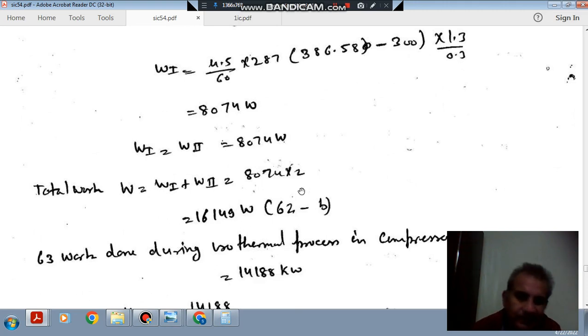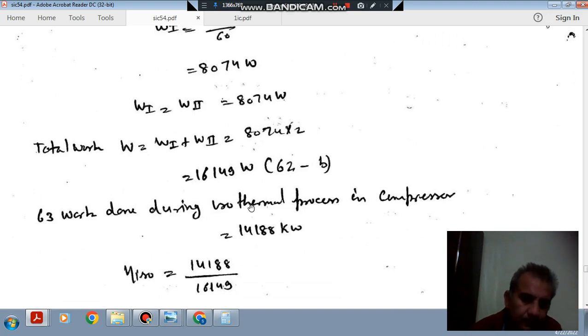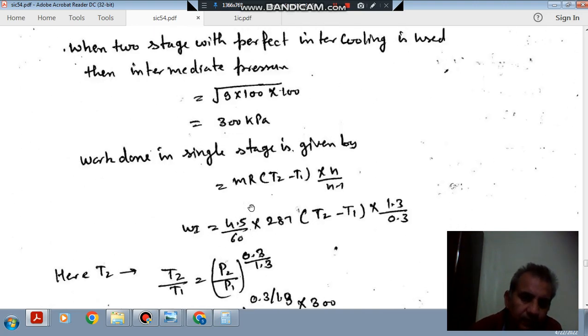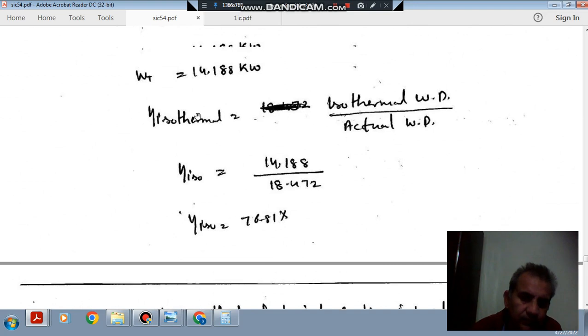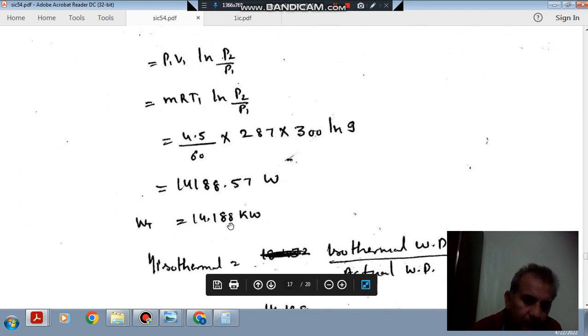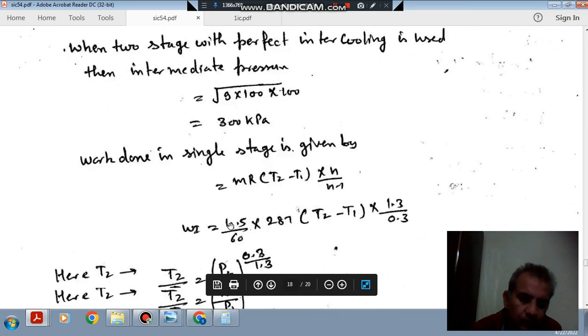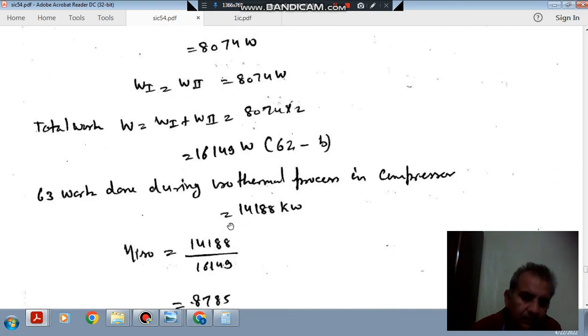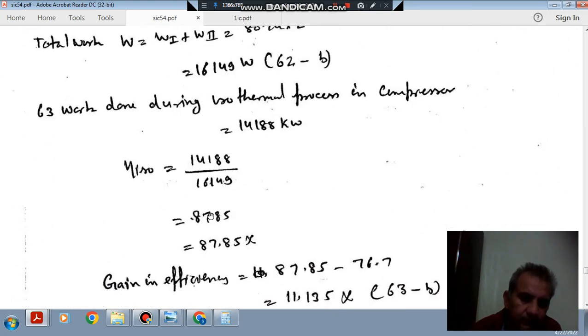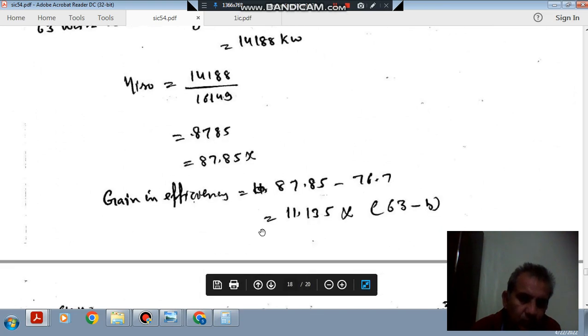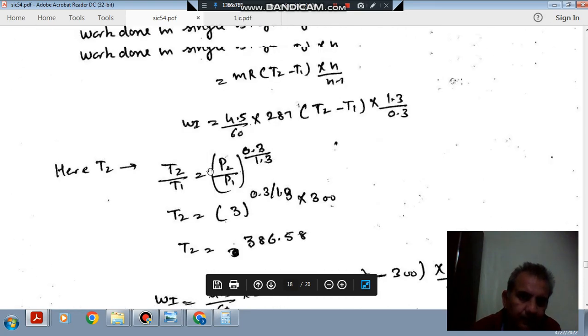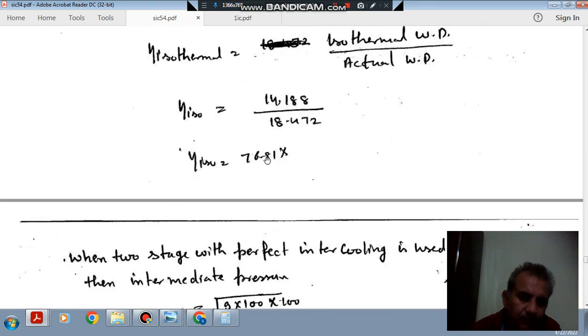For isothermal work done, as you have found, it is 14.88 kW. That will remain the same whether it is single stage or multistage. Isothermal efficiency will be isothermal work done divided by actual work done, which is 87.85%. Previously the efficiency was 76.85%.